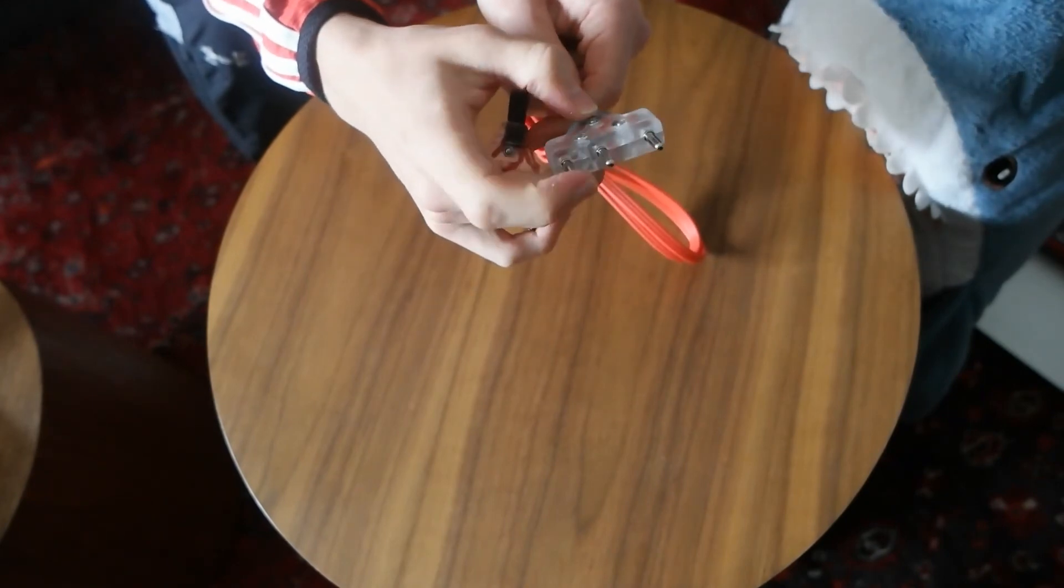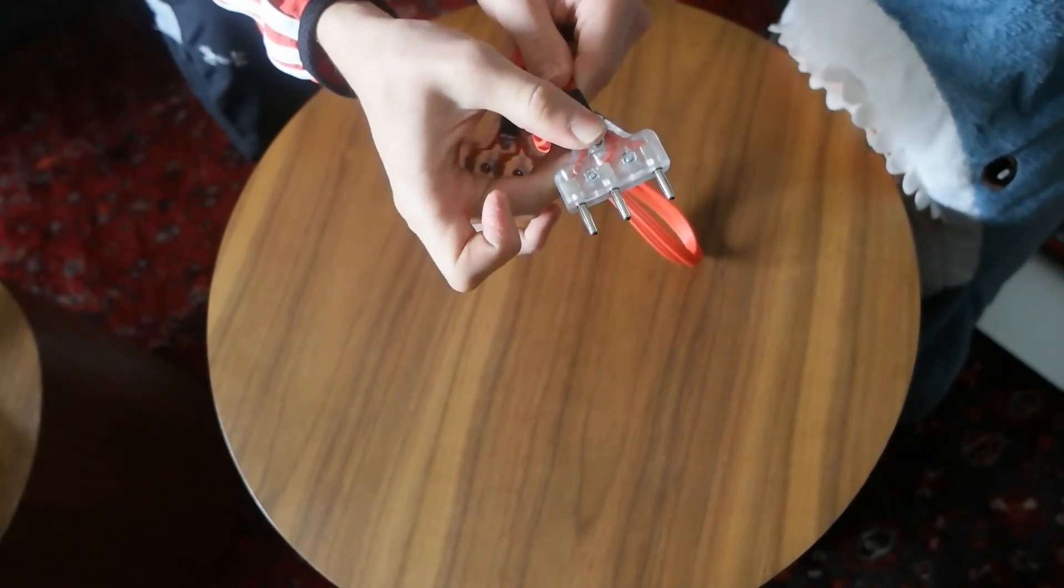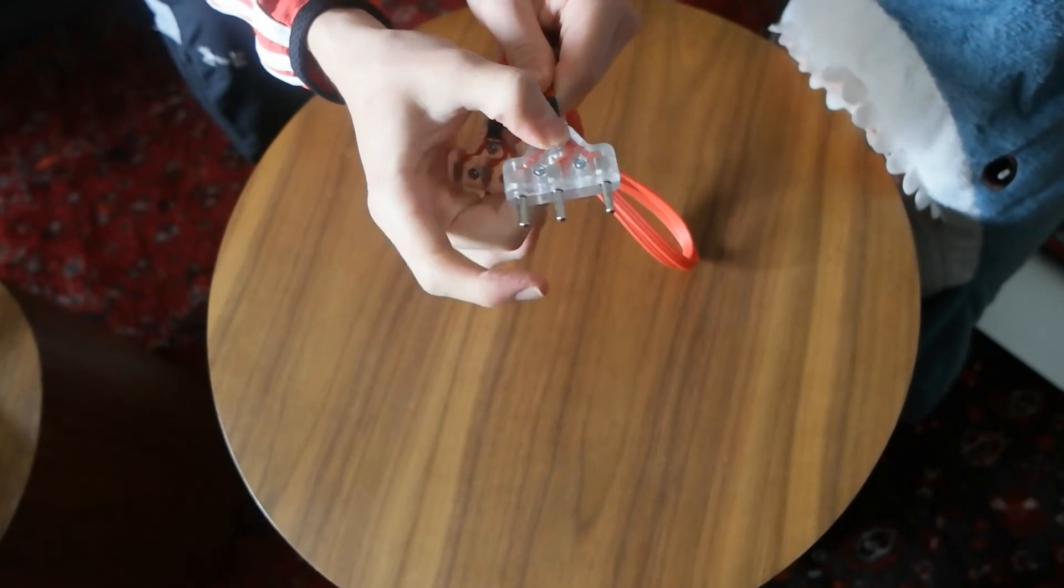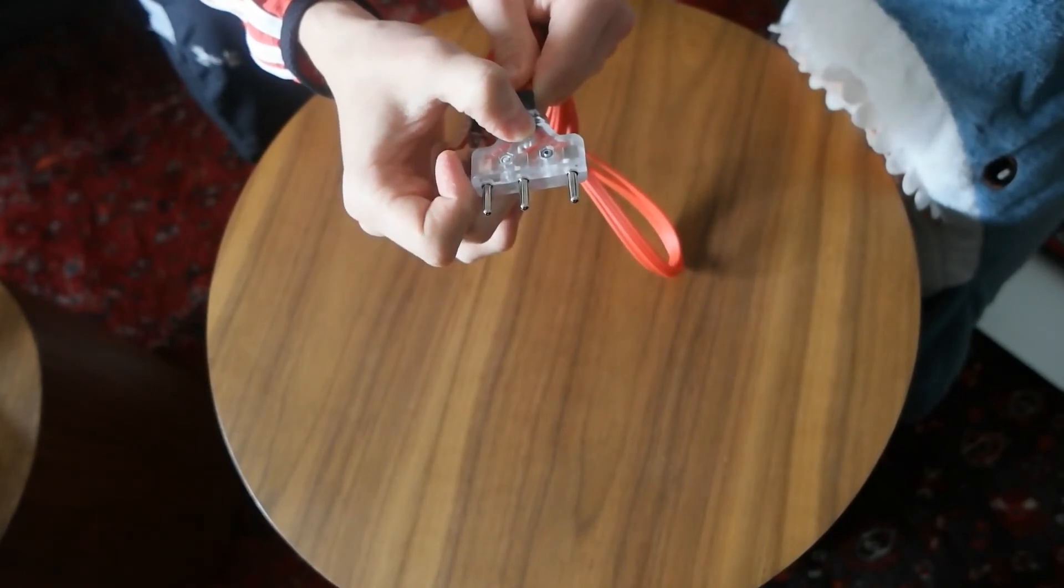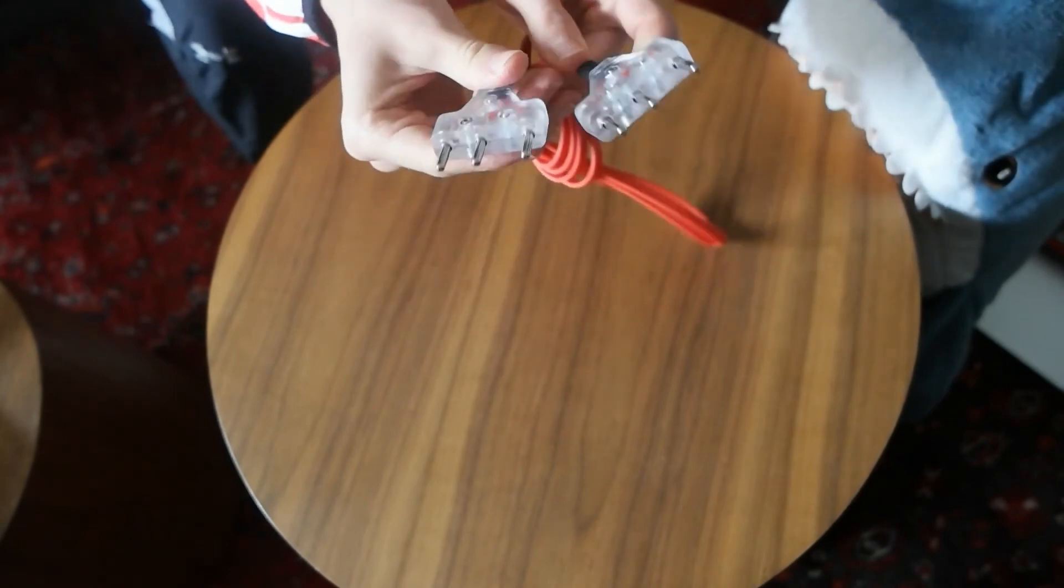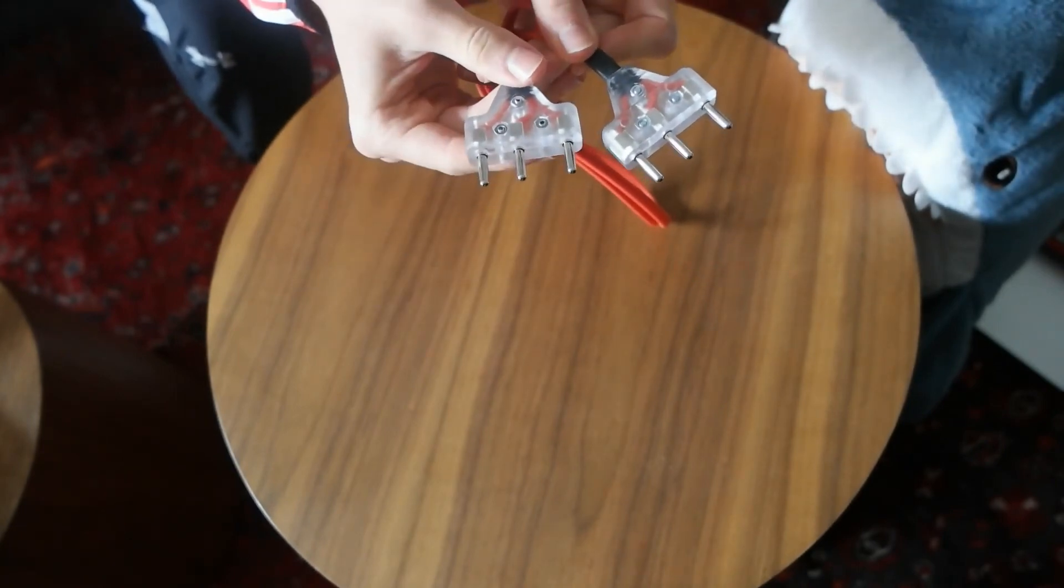The two prongs that are closer together electrically connect within the blade. The prong that's further away from the other two grounds out the guard. Each prong connects to its respective other prong at the other end of the wire.